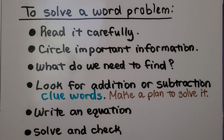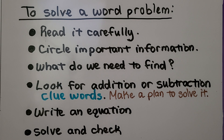As we discussed in the last video, to solve a word problem we read it carefully, we can circle important information, we ask ourselves what do we need to find and what is it asking of us. We look for addition or subtraction clue words, make a plan to solve it, write an equation, then solve it, and check our answer to make sure we did it correctly.